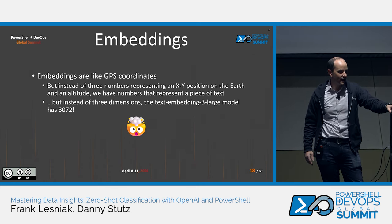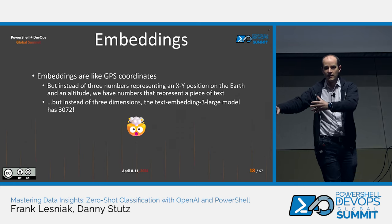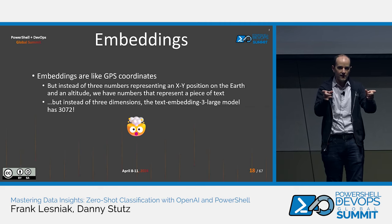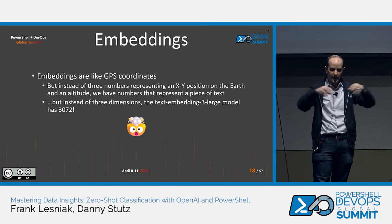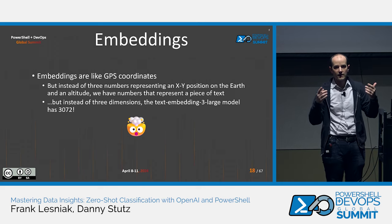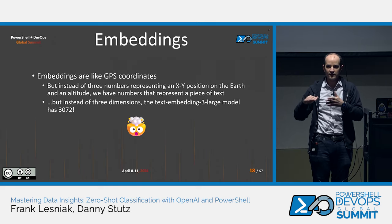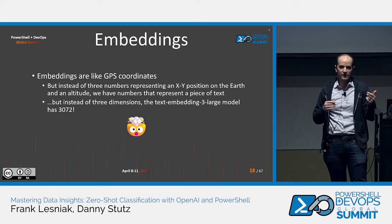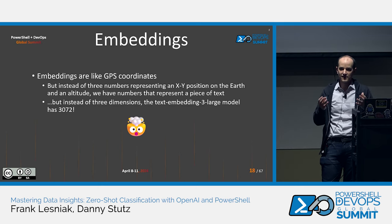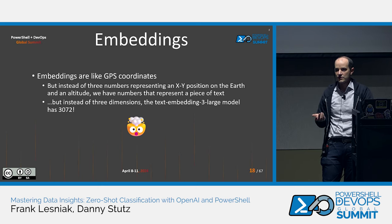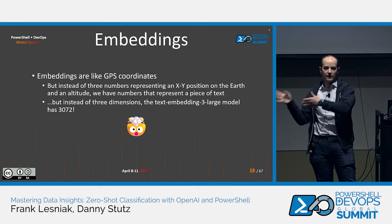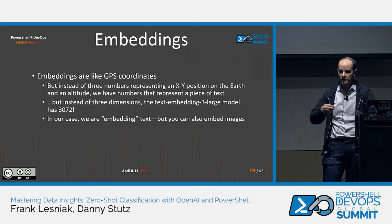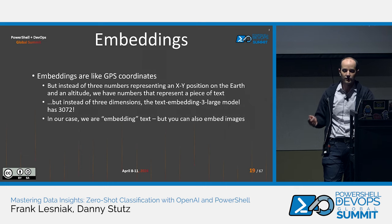Embeddings — this is going to be the first data science-y thing we do. Embeddings are like GPS coordinates, as the slide says. Think of it as: you've got a block of text, and embeddings tell the large language model what that text represents. GPS coordinates have three dimensions: X, Y, plus altitude. Instead of those three dimensions, with a large language model in this case we have 3,072 dimensions, which is impossible to visualize. You put in text, you get out numbers. Just a note — we are embedding text in this example, but you can also embed images.